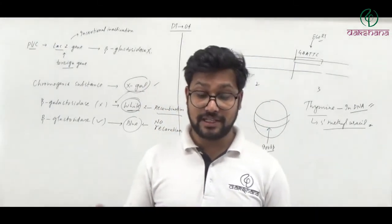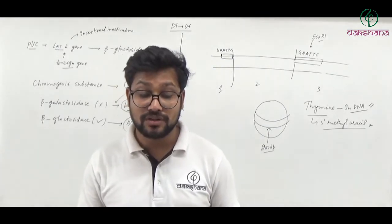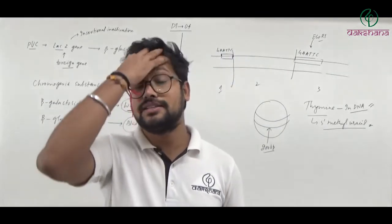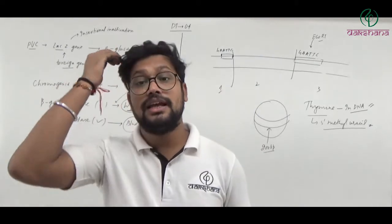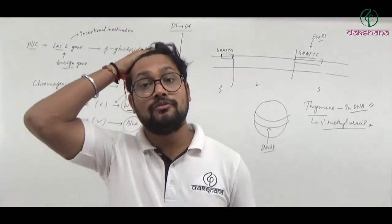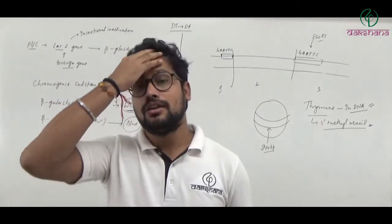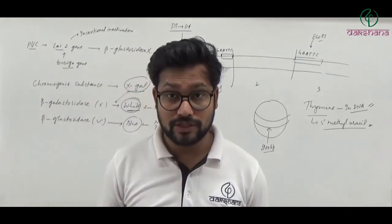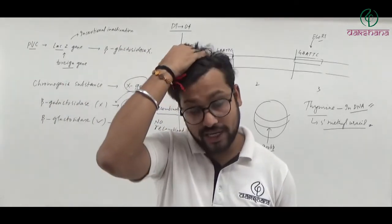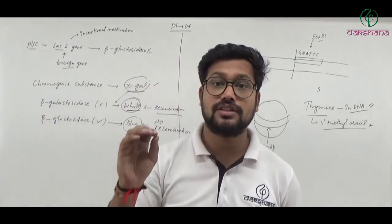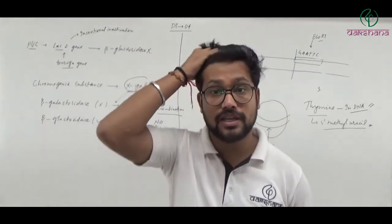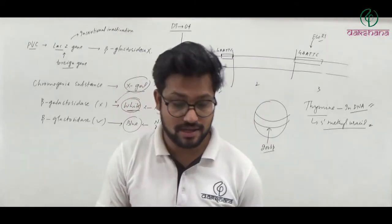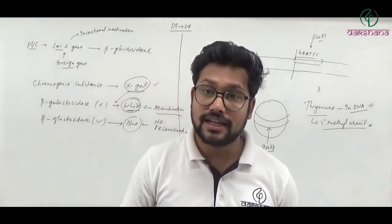Question number thirty-nine: Two allelic genes are located on two homologous chromosomes. Alleles are located on homologous chromosomes. So two allelic genes will be present on two homologous chromosomes. Question number thirty-nine's second option is the right answer.